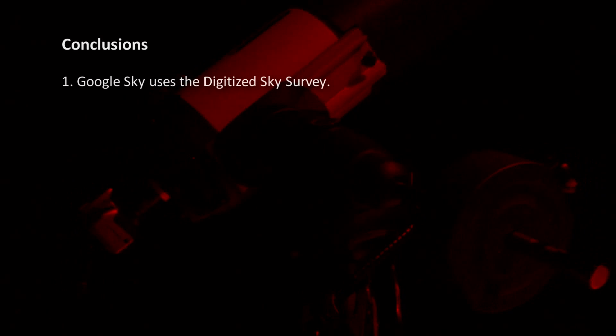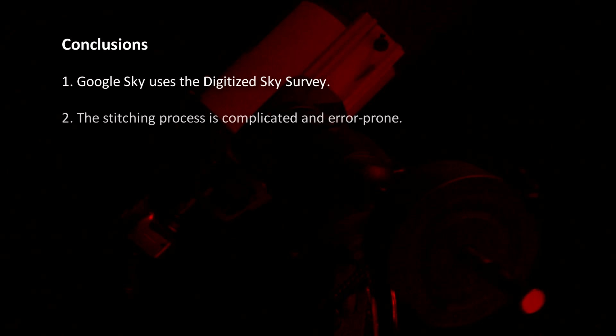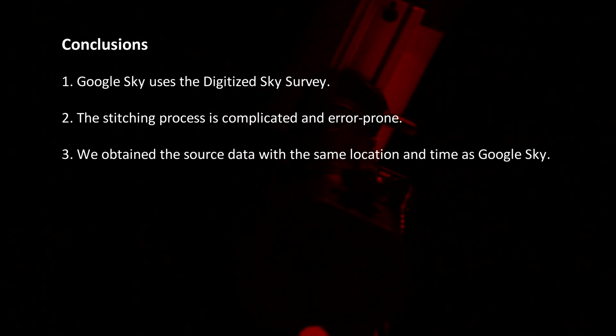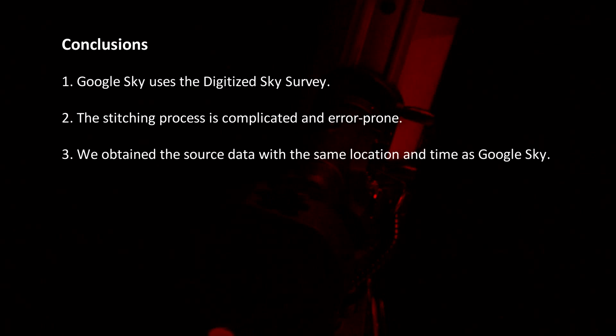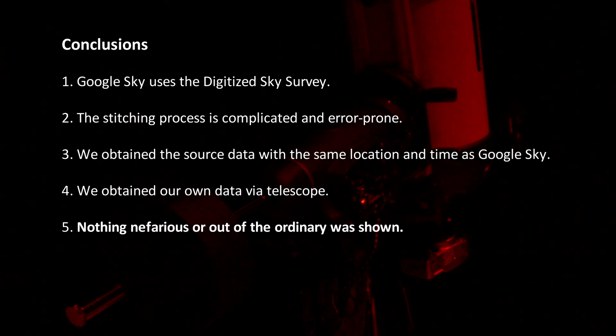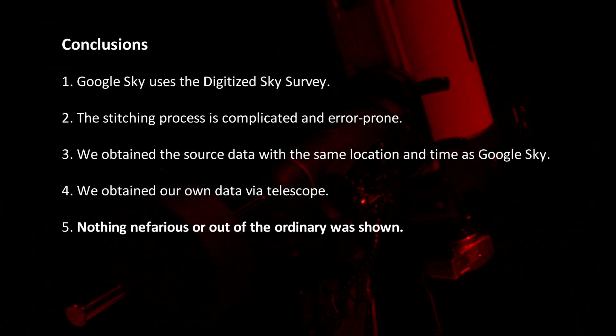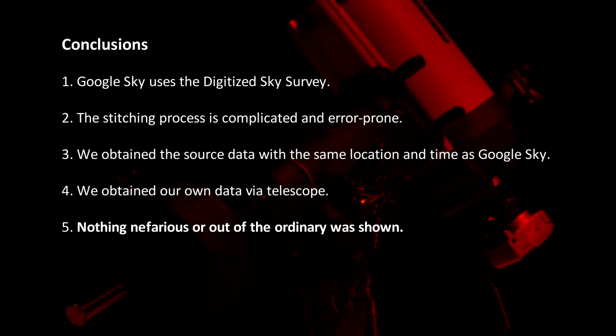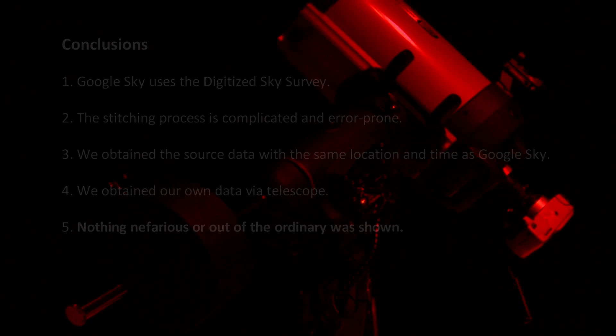To recap: Google Sky uses the Digitized Sky Survey for their data source. We know the stitching process is complicated and error-prone. We independently obtained the source data with the same location and time as Google Sky, and then obtained our own data via telescope. In all cases, nothing nefarious or out of the ordinary was shown. The Google Sky blank spot is a glitch in the software, not a cover-up or conspiracy to hide Nibiru or the truth. Be sure to try the methods outlined in this video yourself — you can apply these techniques to any blank spot in Google Sky.